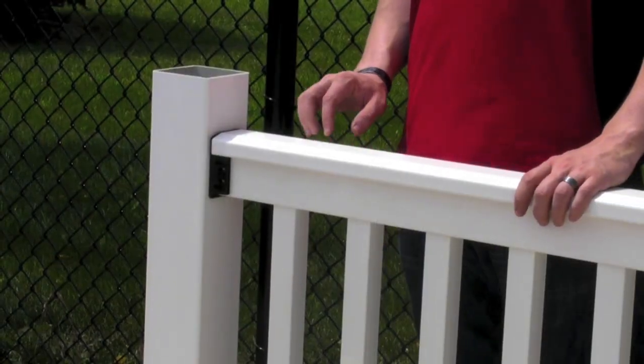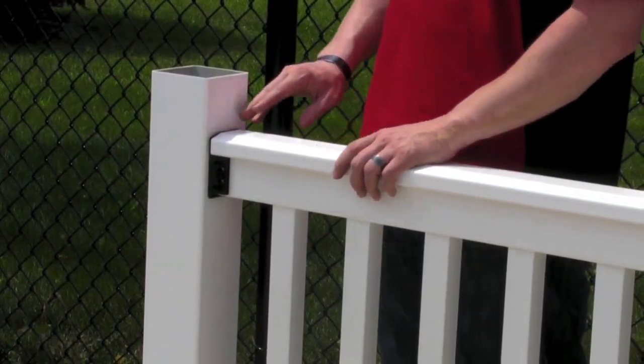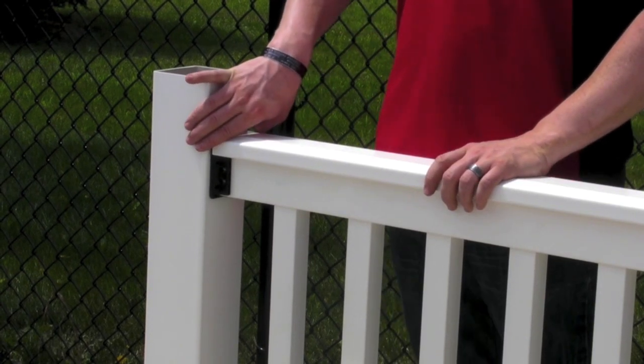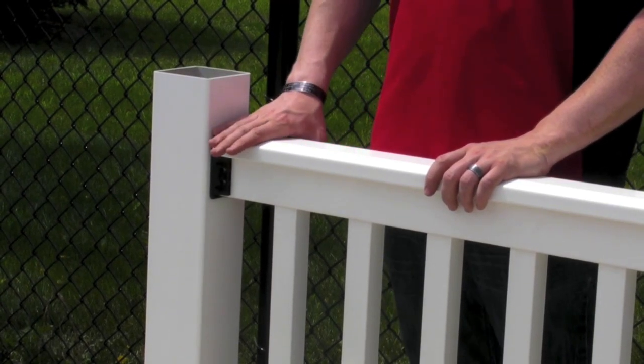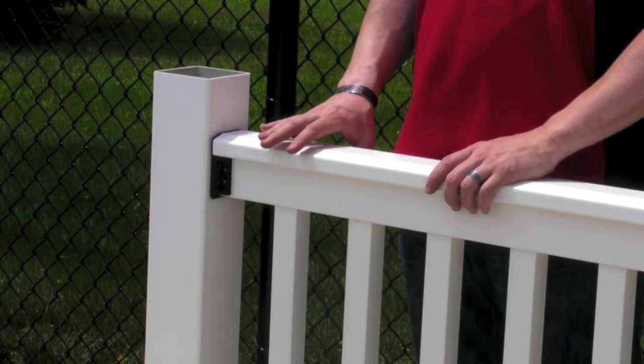Once you have your vinyl railing section in place, you can mount your black bracket to the post as well as the rail to your black bracket, ensuring your screws are properly seated into their positions.